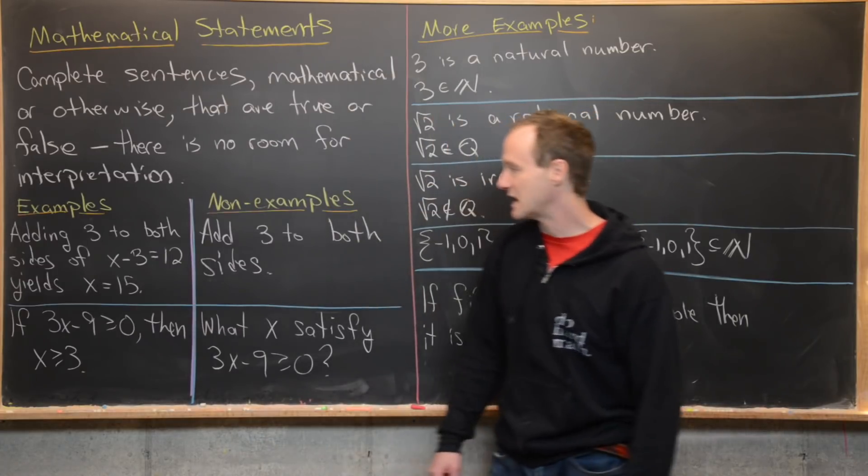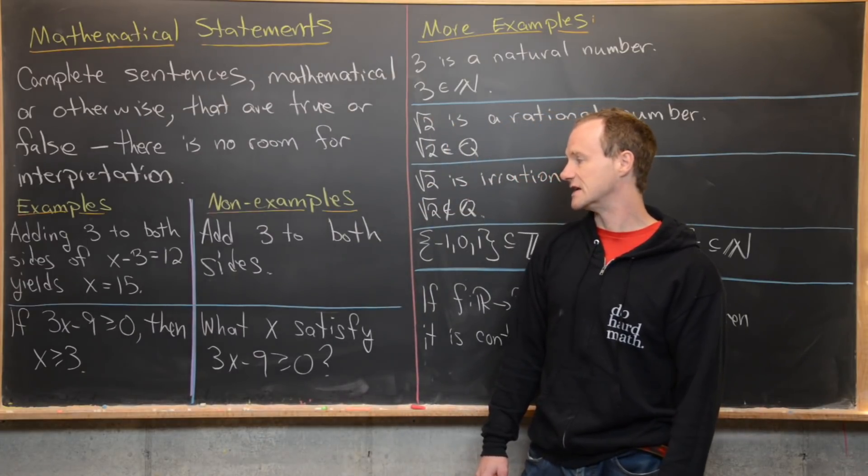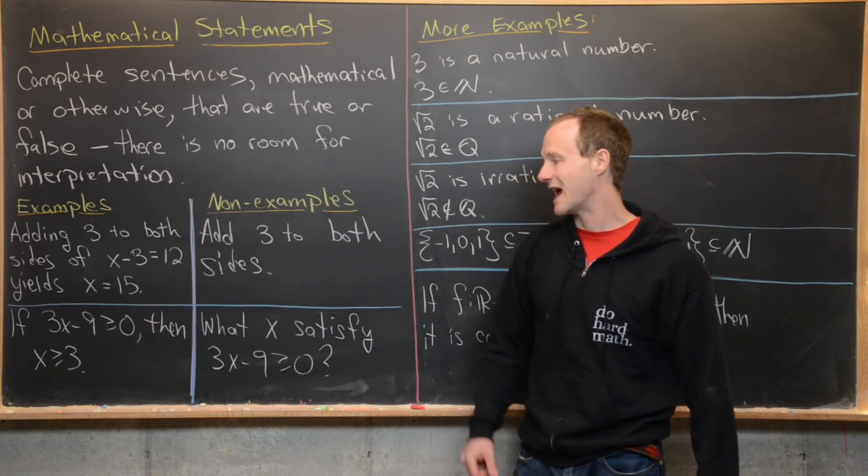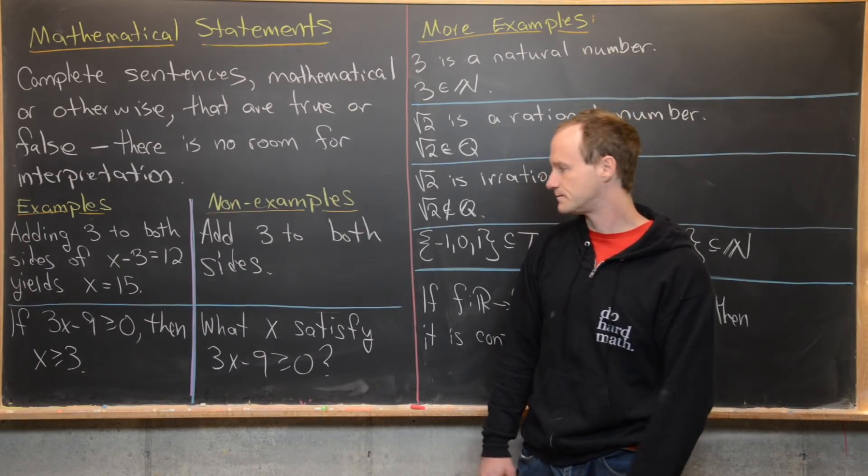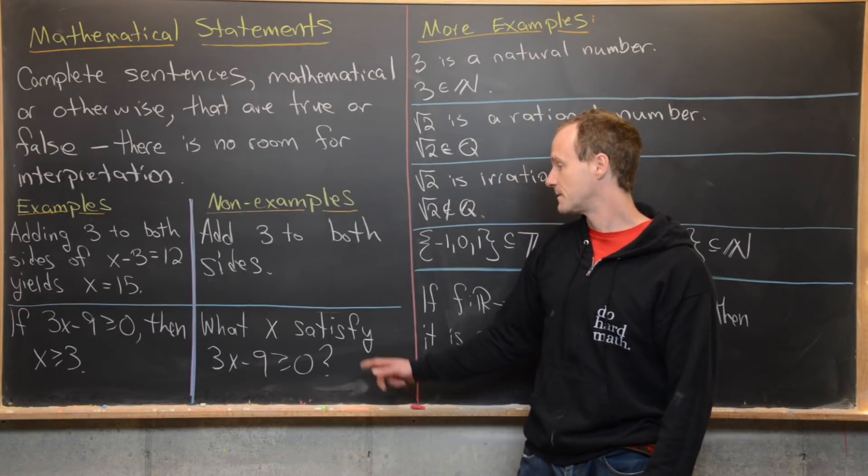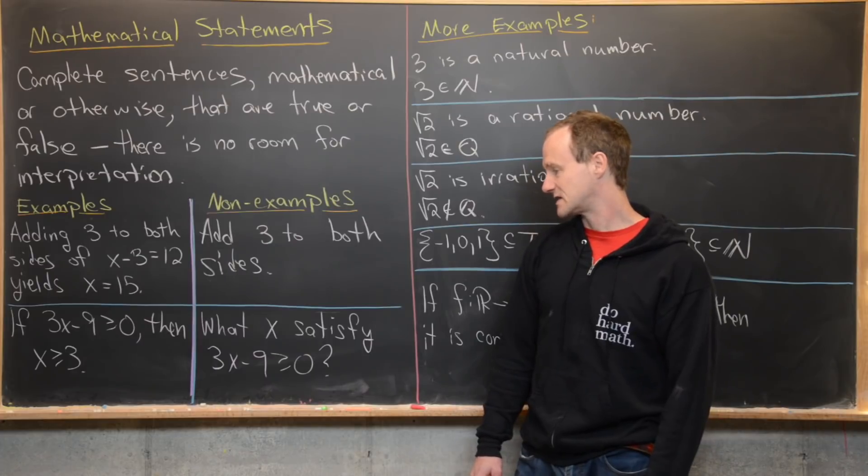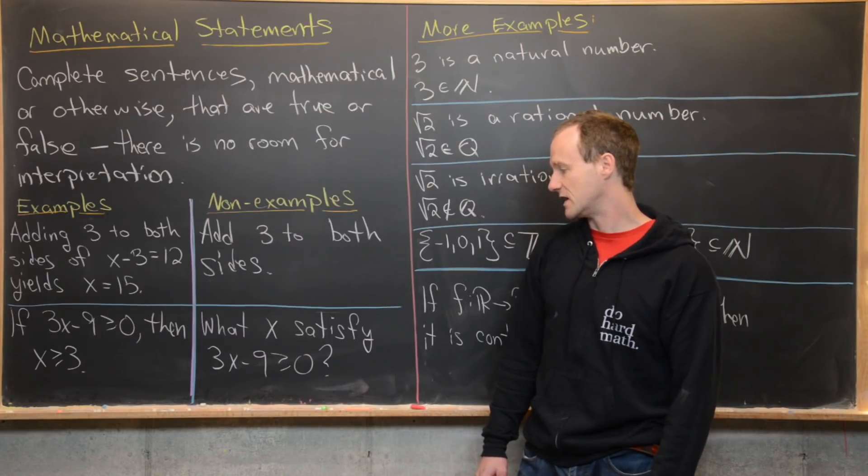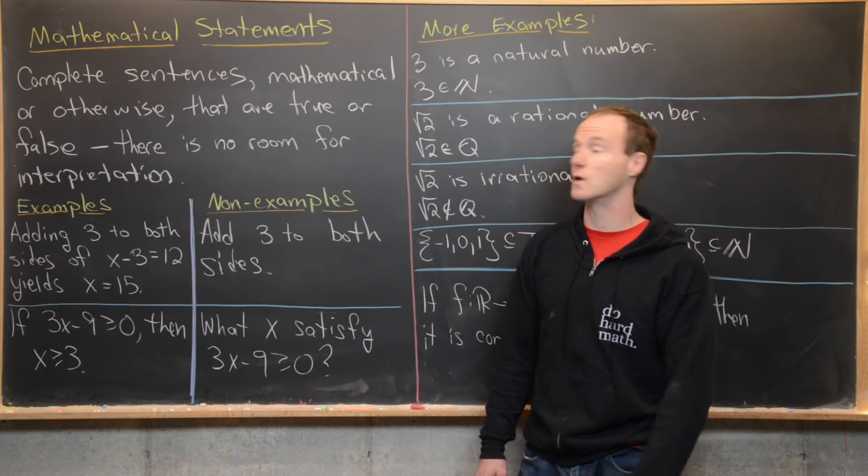Next we have if three x minus nine is bigger than or equal to zero, then x is bigger than or equal to three. That would be a mathematical statement. Versus the non-example, what x satisfy three x minus nine is bigger than or equal to zero. That's a question.